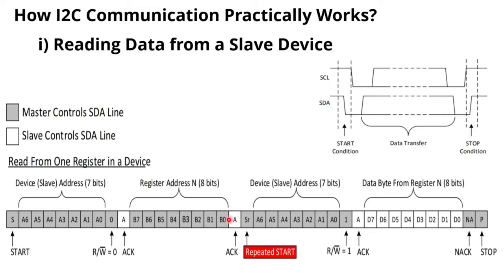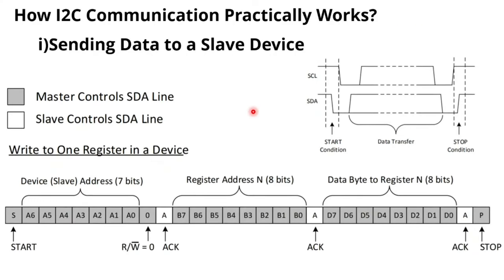After the repeated start and slave address with read bit, the slave acknowledges and the master reads as many bytes as needed. At the end, the master sends a negative acknowledgement to indicate no further communication is needed, then sends the stop condition.